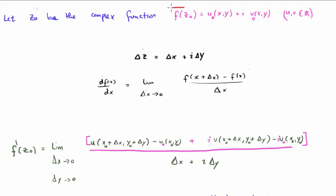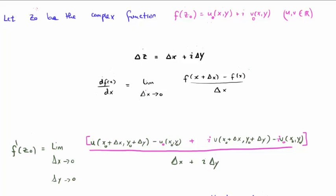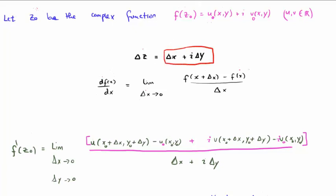Now we're going to take the derivative of this particular function. Notice we're varying z, which means we actually have delta z, which is delta x plus iota delta y. For clarity, I've written the definition of a derivative in one dimension here, where we take our function f of x, increment it by delta x, take the original function away from the incremented function, and divide by the increment. That expression is shown at the bottom center of your screen.